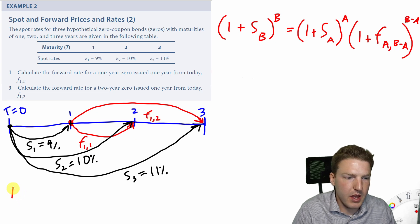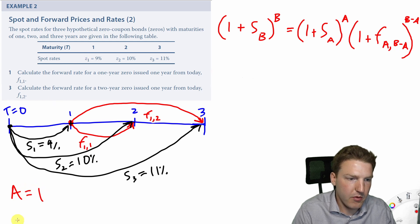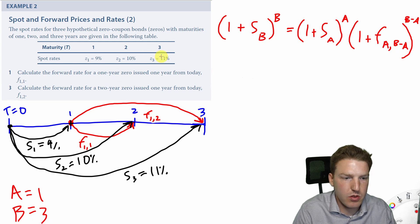So in this example, A is equal to 1, the 1 year spot rate, and B is equal to 3. So we use the 3 year spot rate.